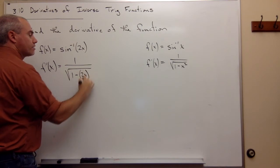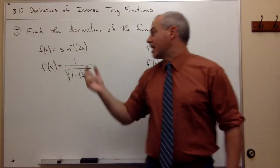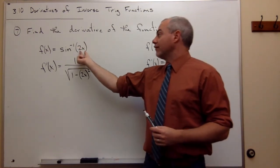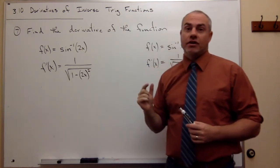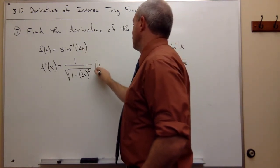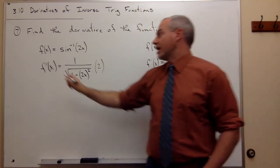We need to multiply this by the derivative of the inside function, and the derivative of 2x of course is 2. So we multiply this by 2, and we have our derivative.